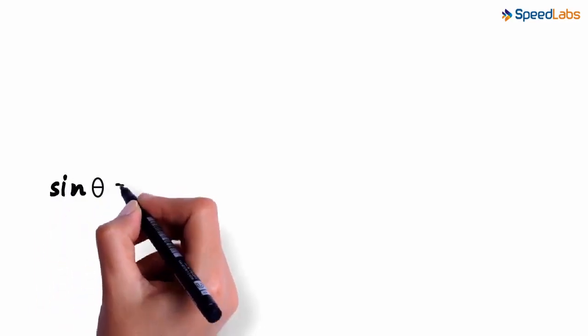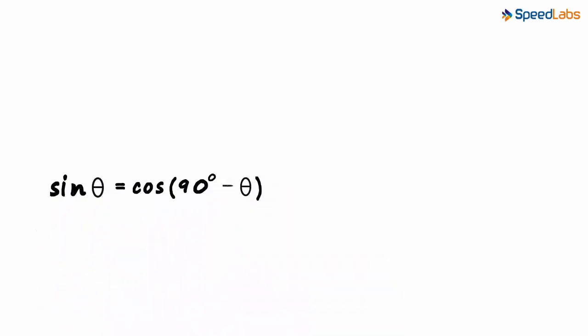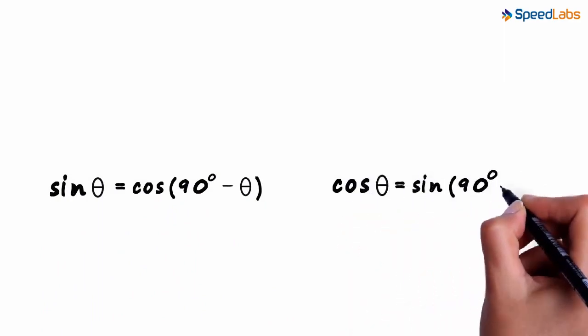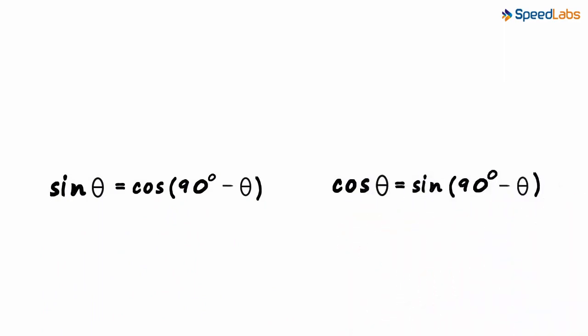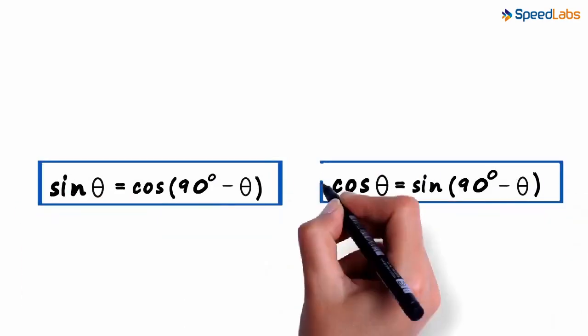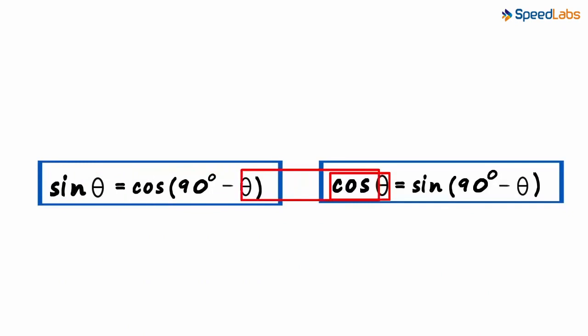Sine theta equals cos(90° - θ) and cos theta equals sine(90° - θ). These were the two formulae we saw in the previous video. Sine of an angle is equal to the cosine of its complementary angle, and the cosine of an angle is equal to the sine of its complementary angle.